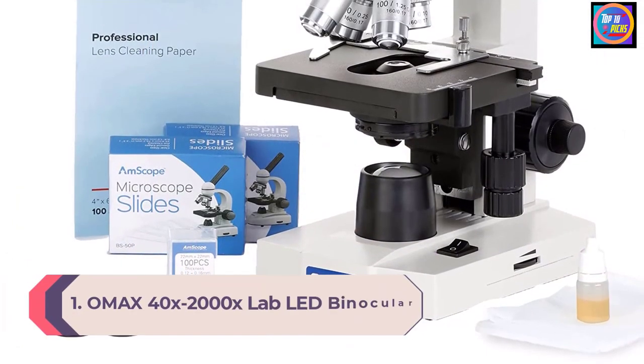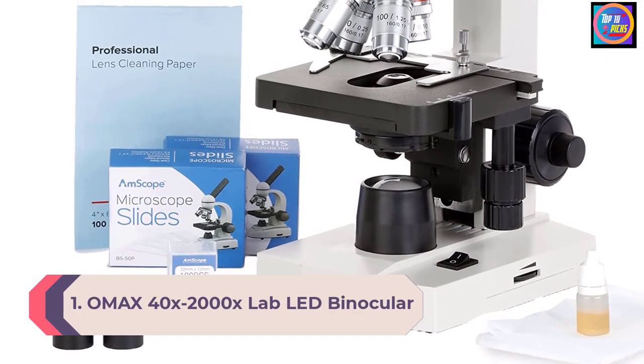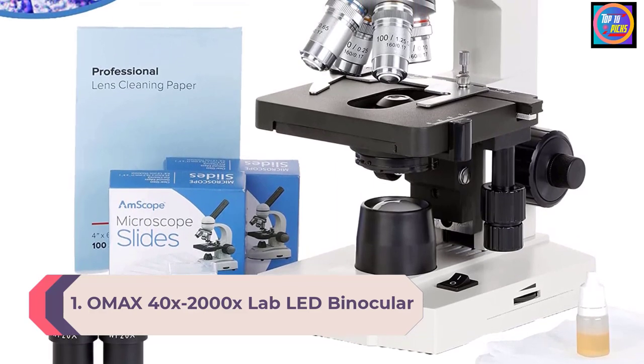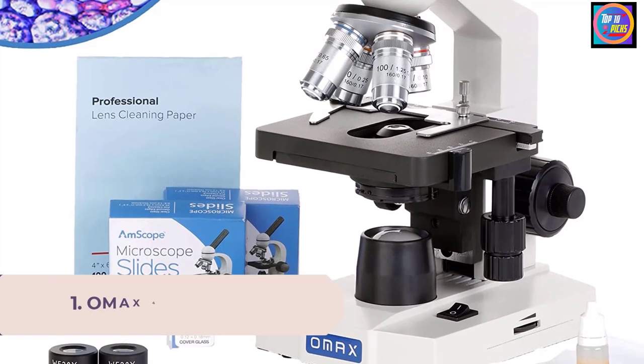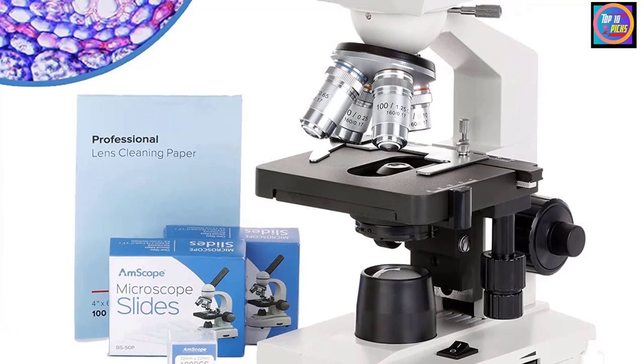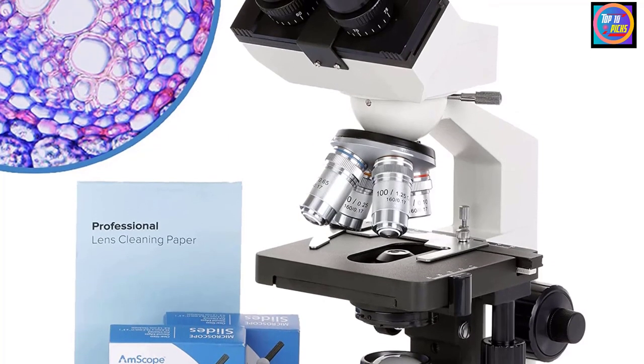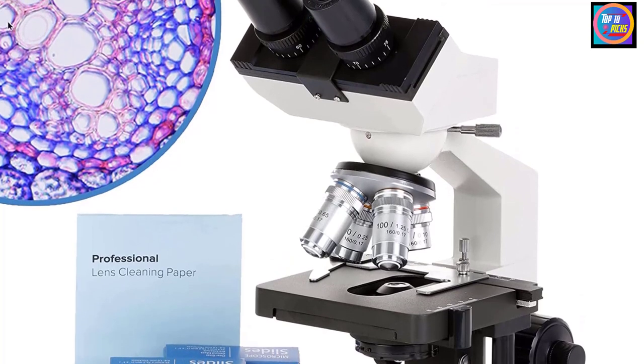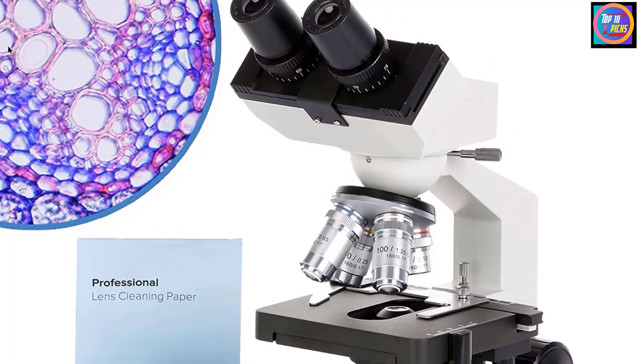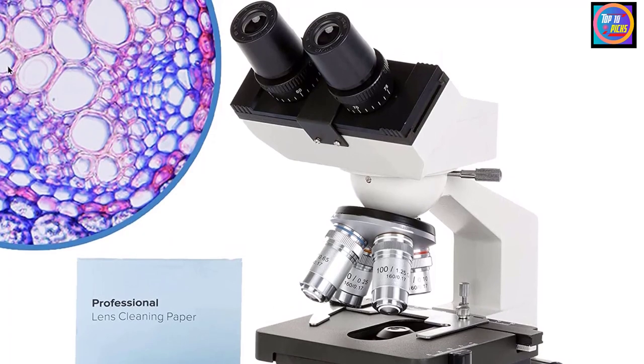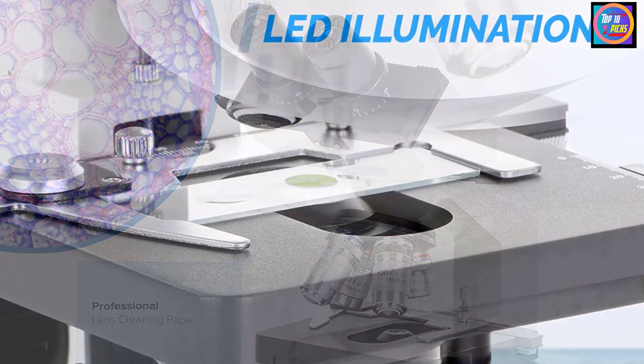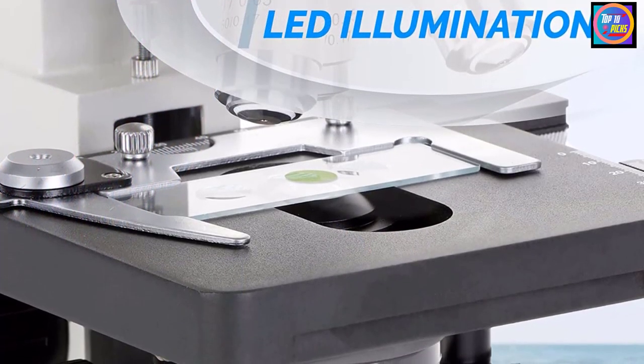Number 1. OMAX 40x2000X Lab LED Binocular Microscope. Thanks to the combination of coarse and fine focus, with the OMAX 40x2000X microscope, you are in control of adjusting how much detail you want to see from your object. The binocular offers eight different magnification levels from 40x to 2000x, so you can closely observe cells.